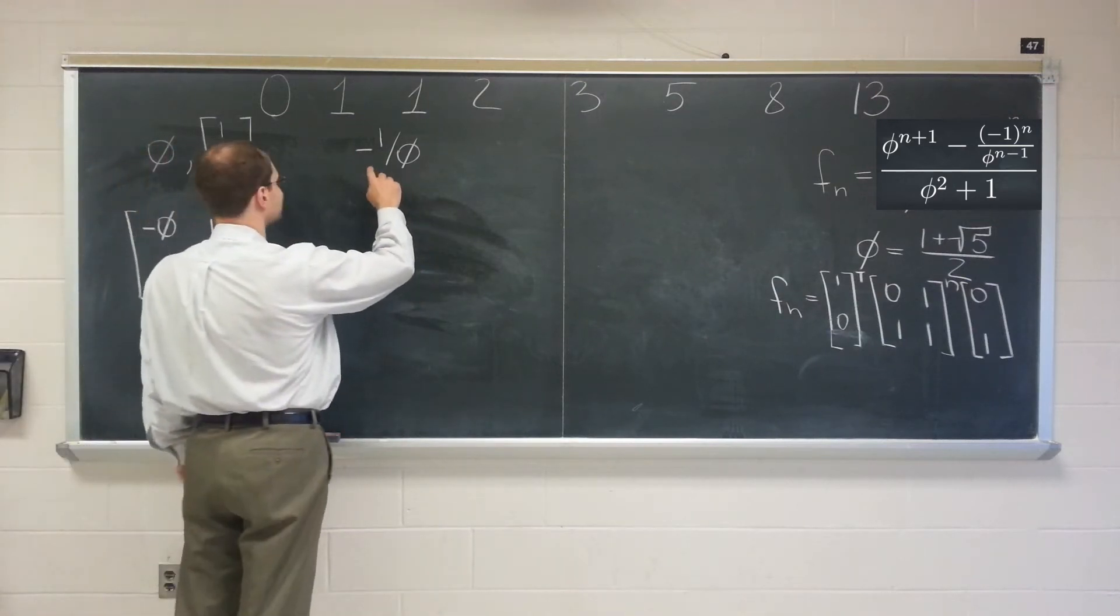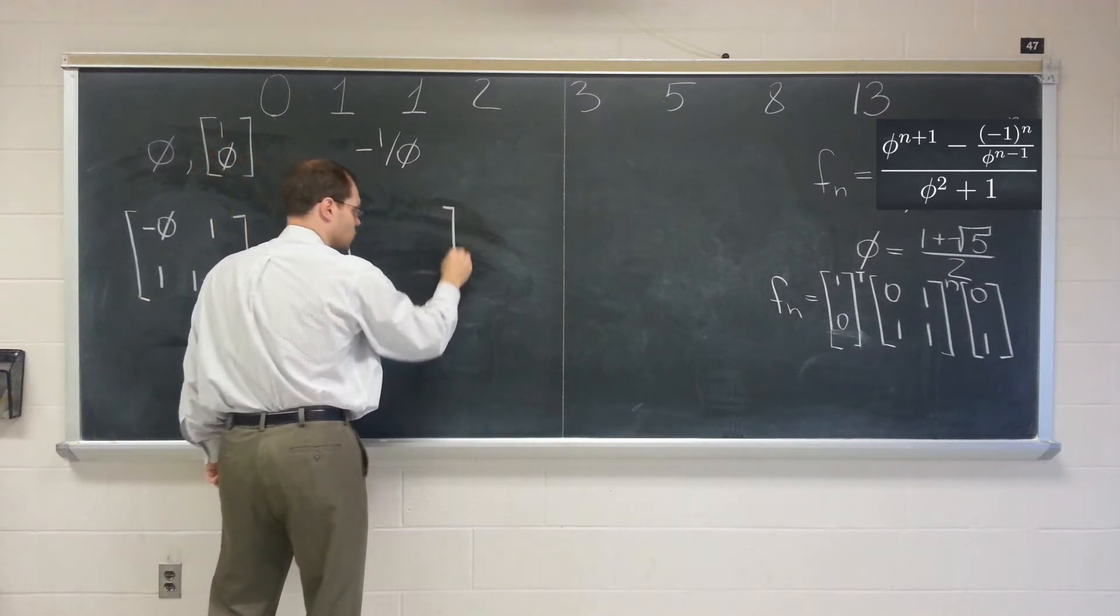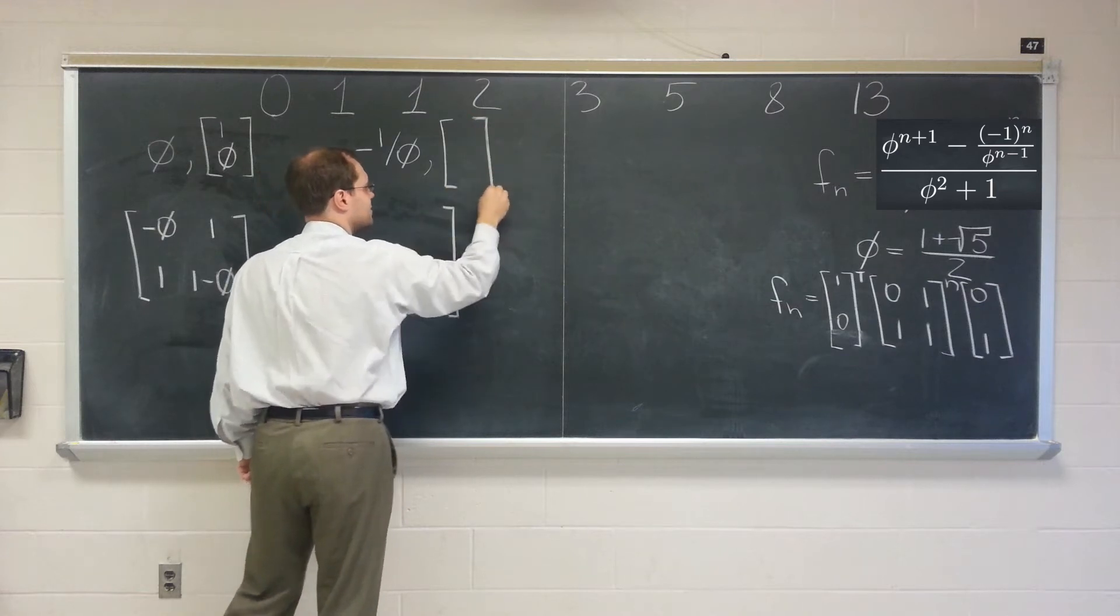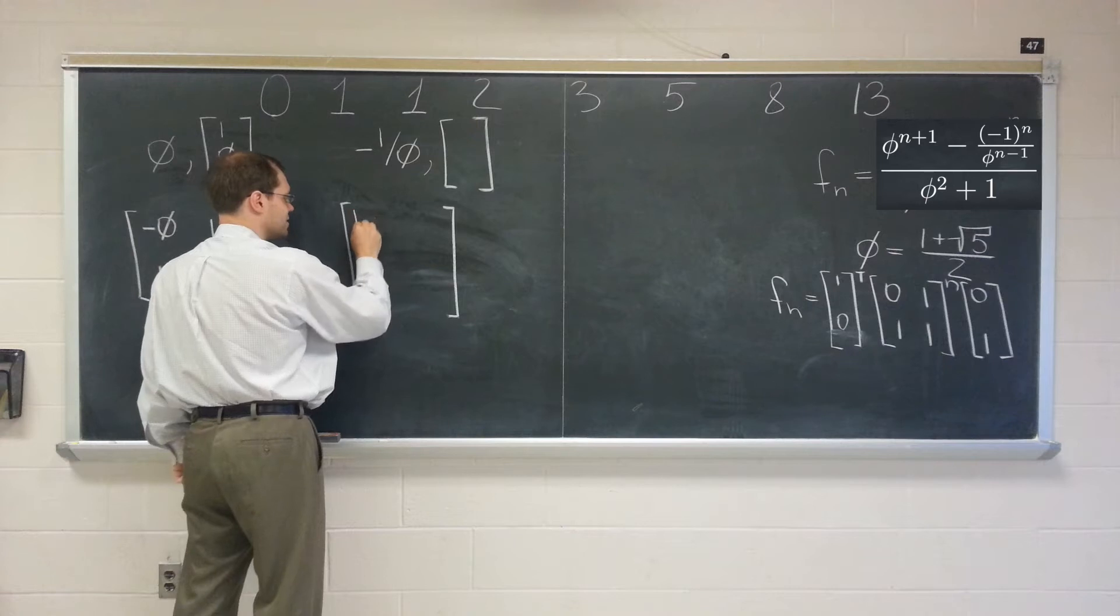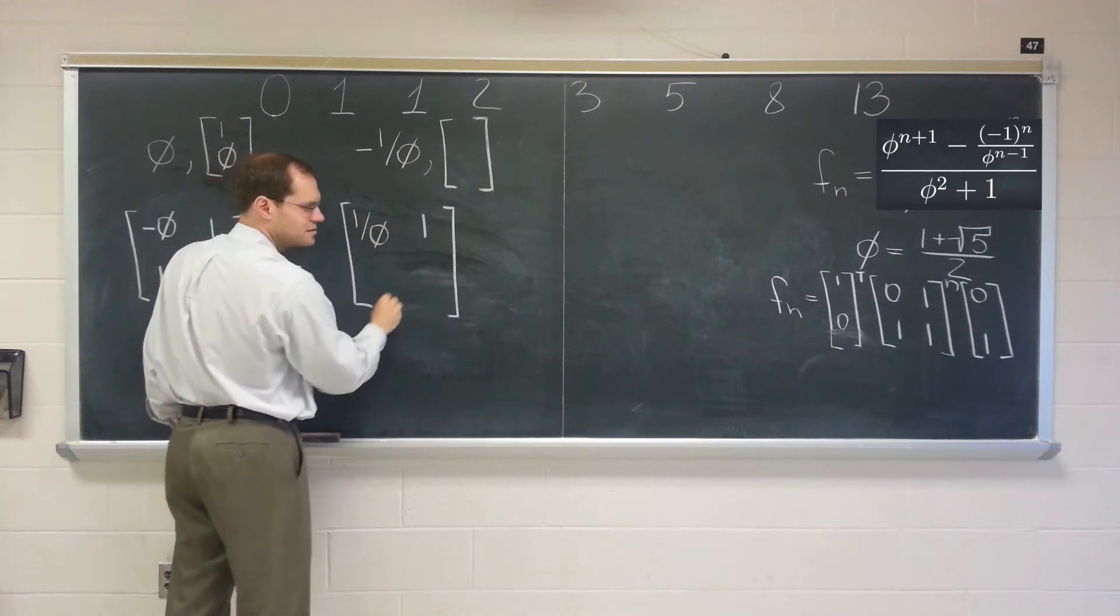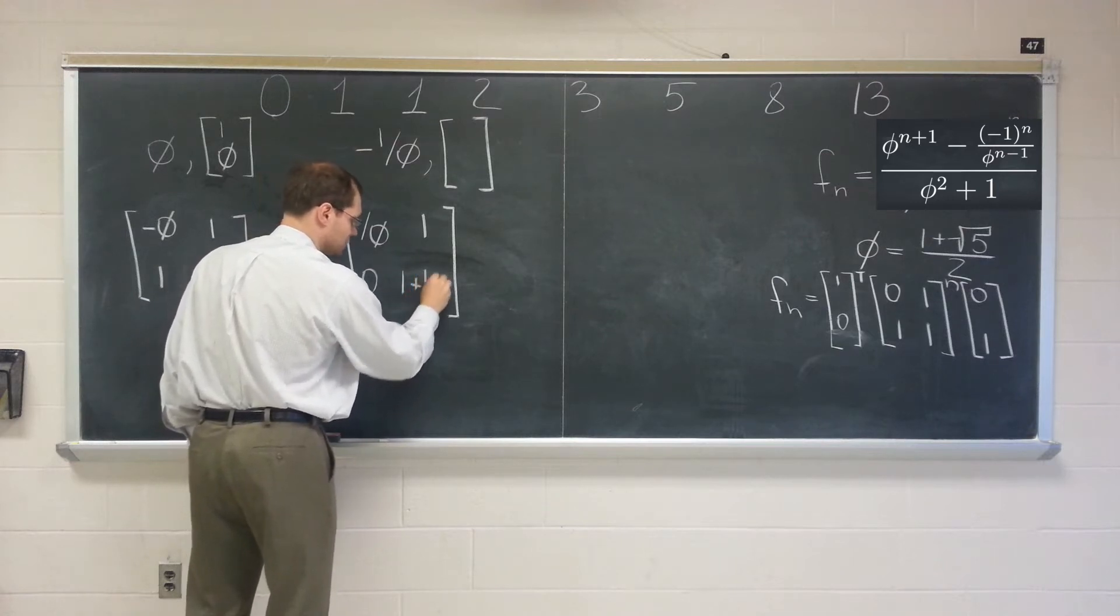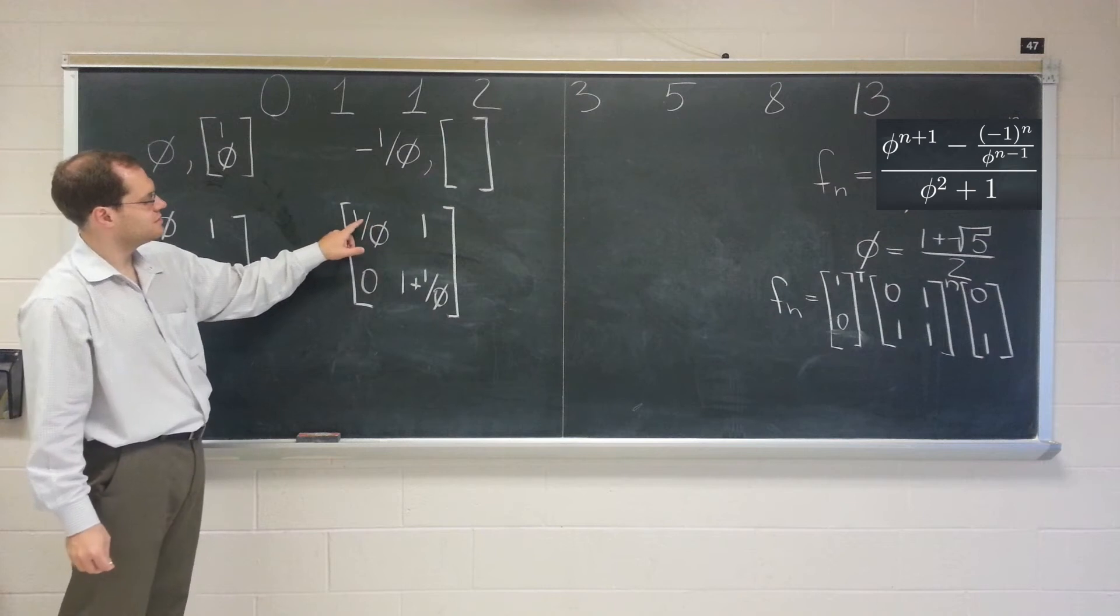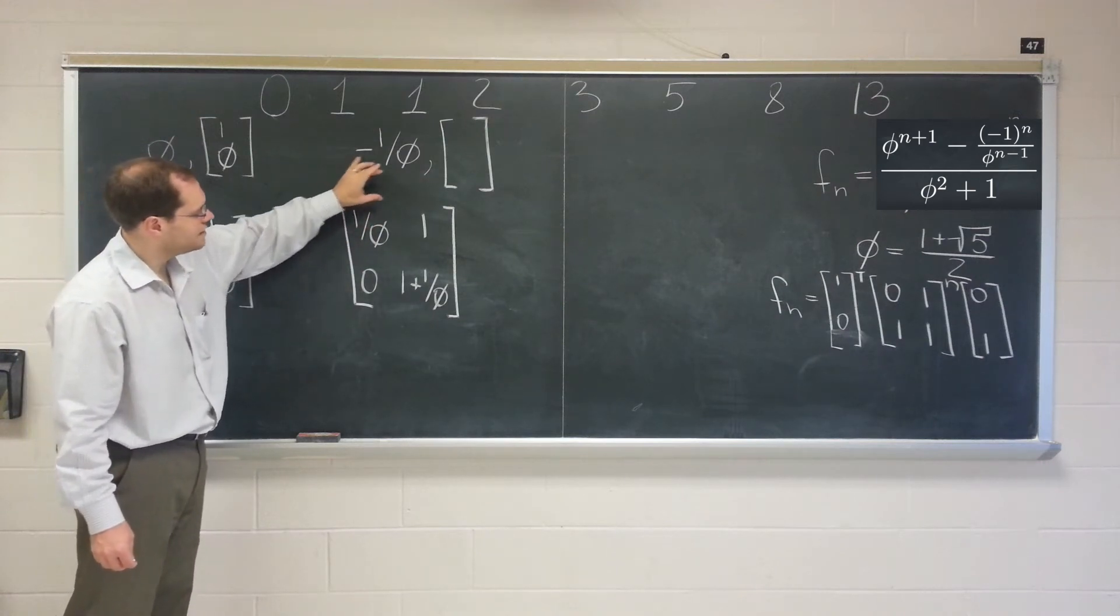And here is the second eigenvector. So let's see. So subtracting minus 1. So let's prepare just so that we can write it in. Subtracting minus 1 over phi from the diagonal leaves us with 1 over phi. 1, 0, 1, plus 1 over phi. And just from the first row, we see that the null space, excuse me, sorry, the null space is phi, negative 1.